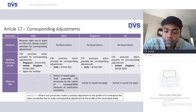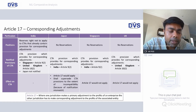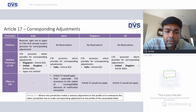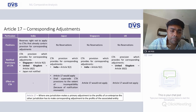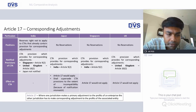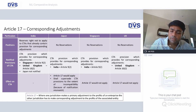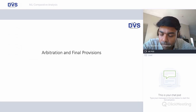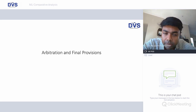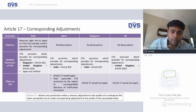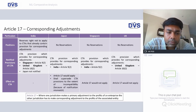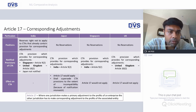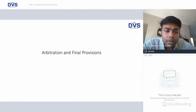Article 17 on corresponding adjustments: India reserves the right not to apply to CTAs that already contain provisions for corresponding adjustments. All the other three countries have no reservation. Article 17 provides that where one jurisdiction makes a primary adjustment to the profits of an enterprise, the other jurisdiction has to provide a corresponding adjustment. It is also imperative to note that as far as domestic law is concerned, India has secondary adjustment provisions in place. Article 17 would apply and shall supersede the CTA provision as far as Japan is concerned. For Singapore and UK, Article 17 would not apply because the provision is already contained in those agreements.